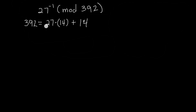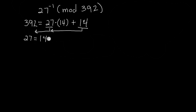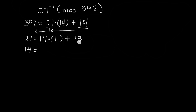To continue with the Euclidean algorithm, we take the divisor and move it to the left position, and the remainder moves to where the divisor was. So the next step is: 27 equals 14 times some number plus some remainder. 14 goes into 27 one time; 14 times 1 is 14, and 27 minus 14 is 13. So 27 equals 14 times 1 plus 13. Then for the next step: 14 can be represented as 13 times 1 plus a remainder of 1.